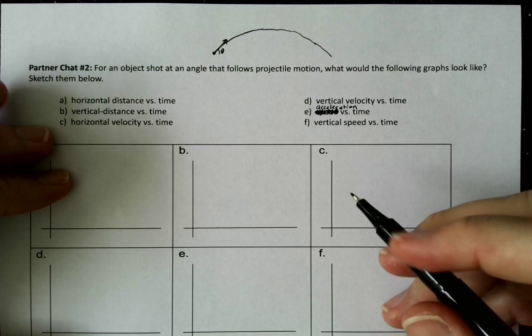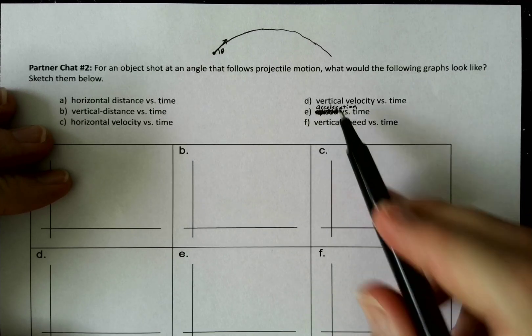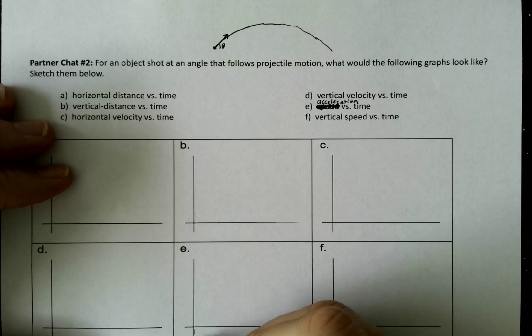Okay, now from here, I'm going to go ahead. I'm going to start with E, the acceleration versus time first, because that one's the easiest.